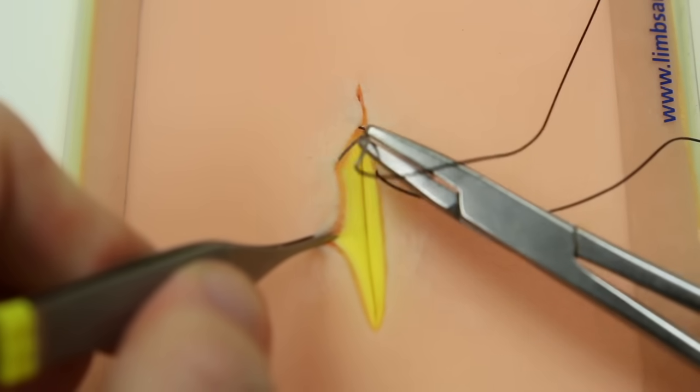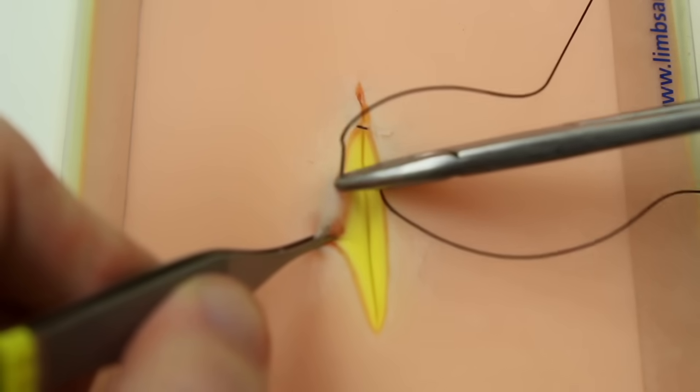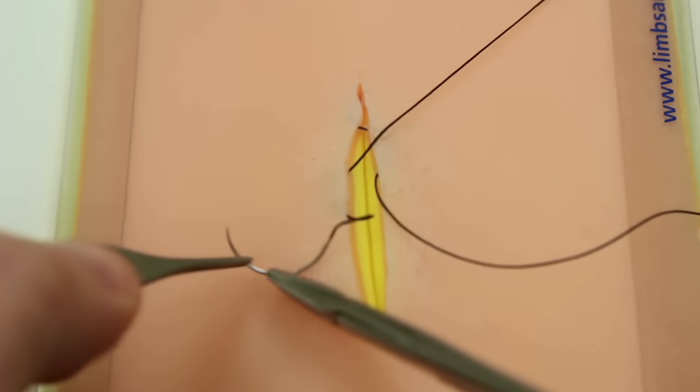As you can imagine, if you pull things together that aren't at the same level, then one skin edge gets proud relative to the other. And that can make for an ugly incision.